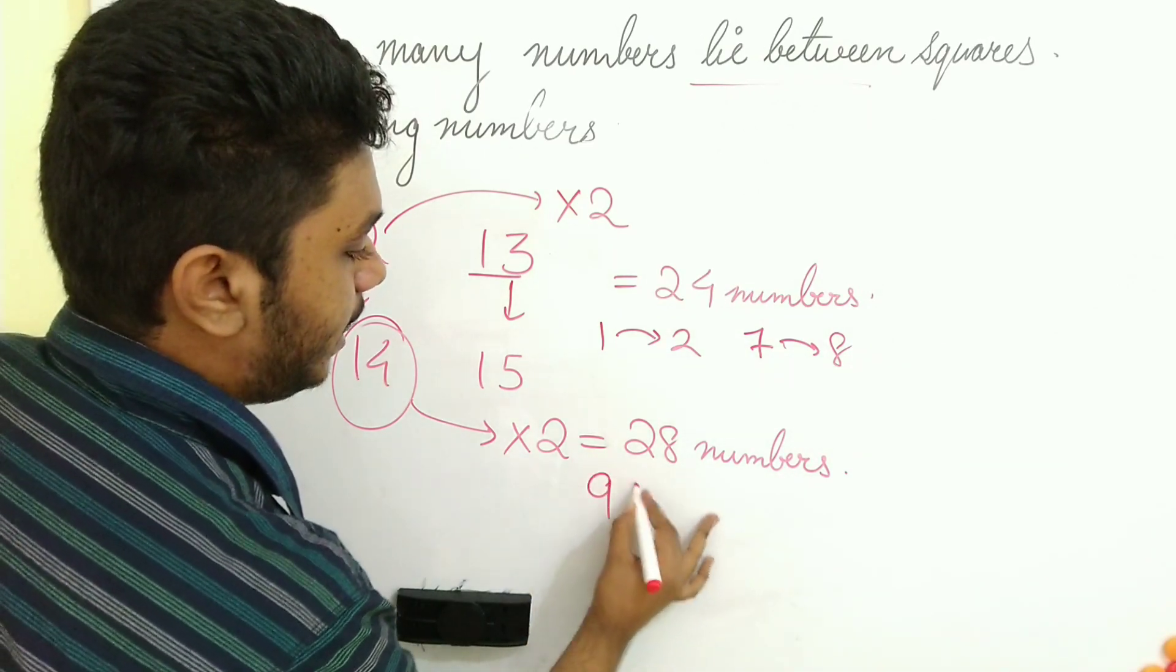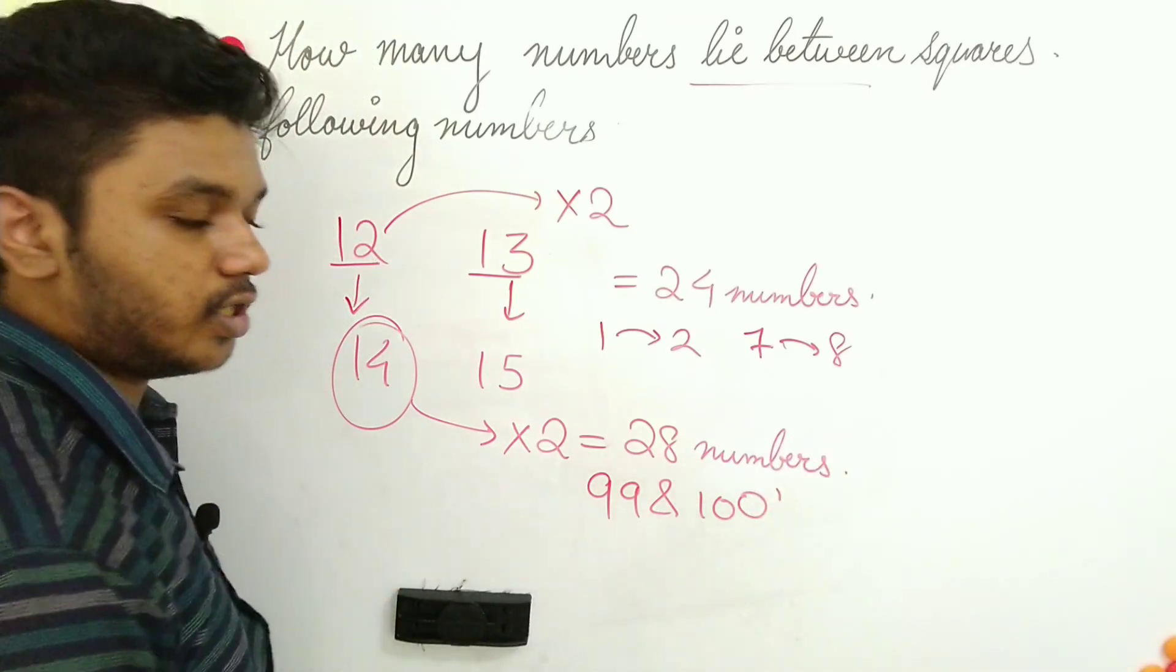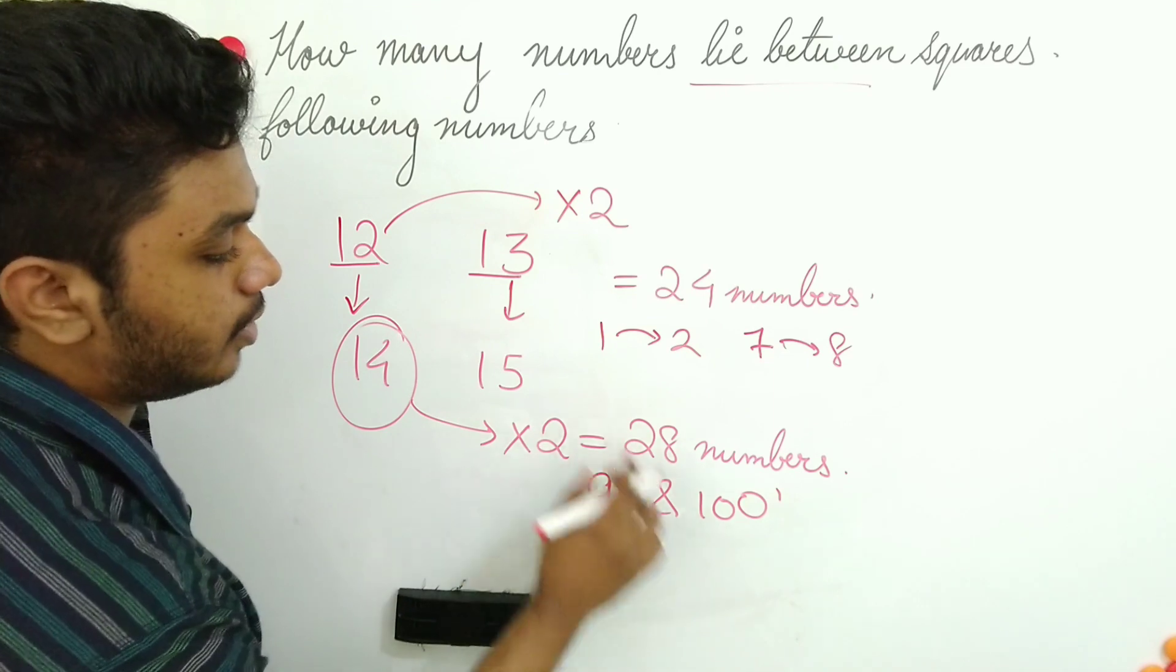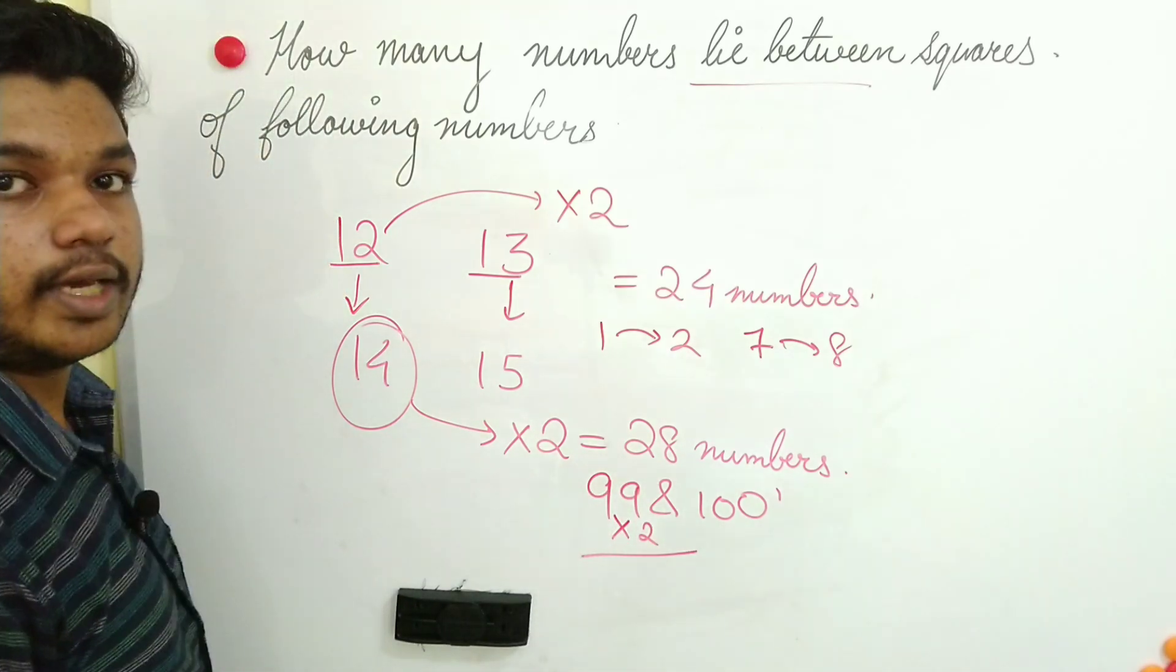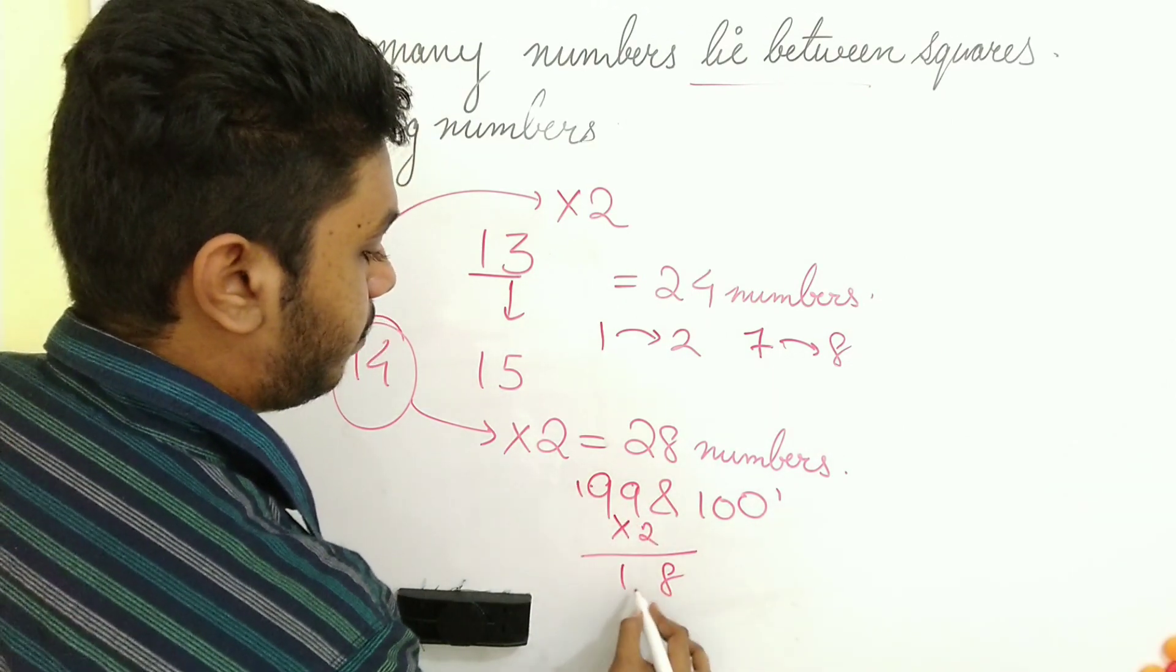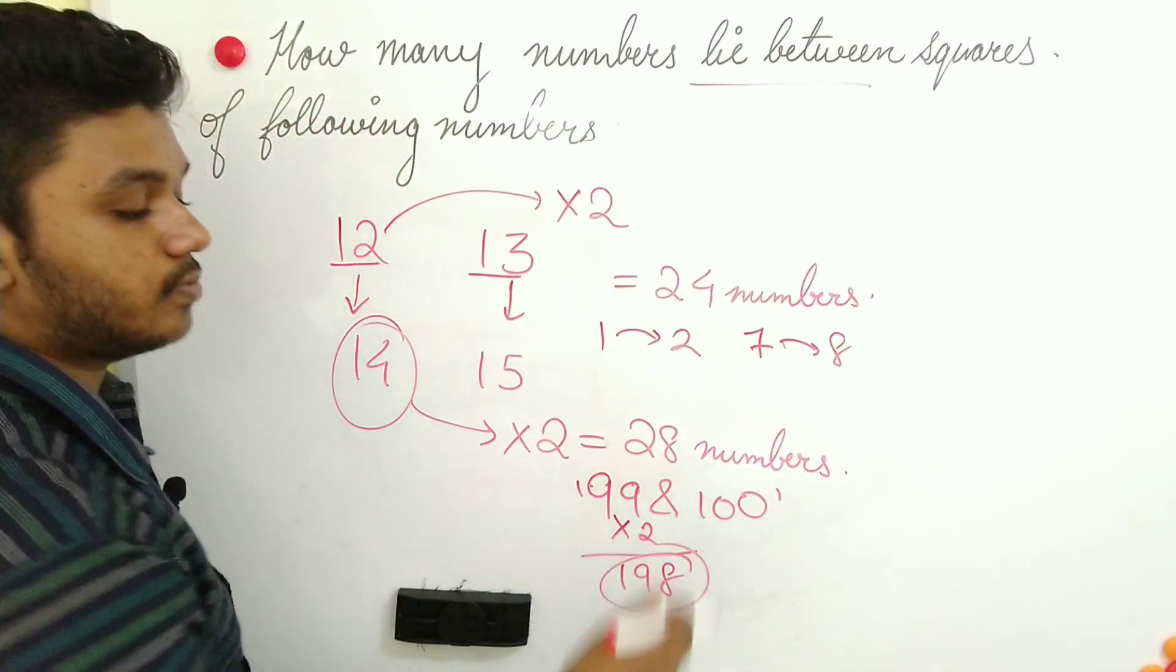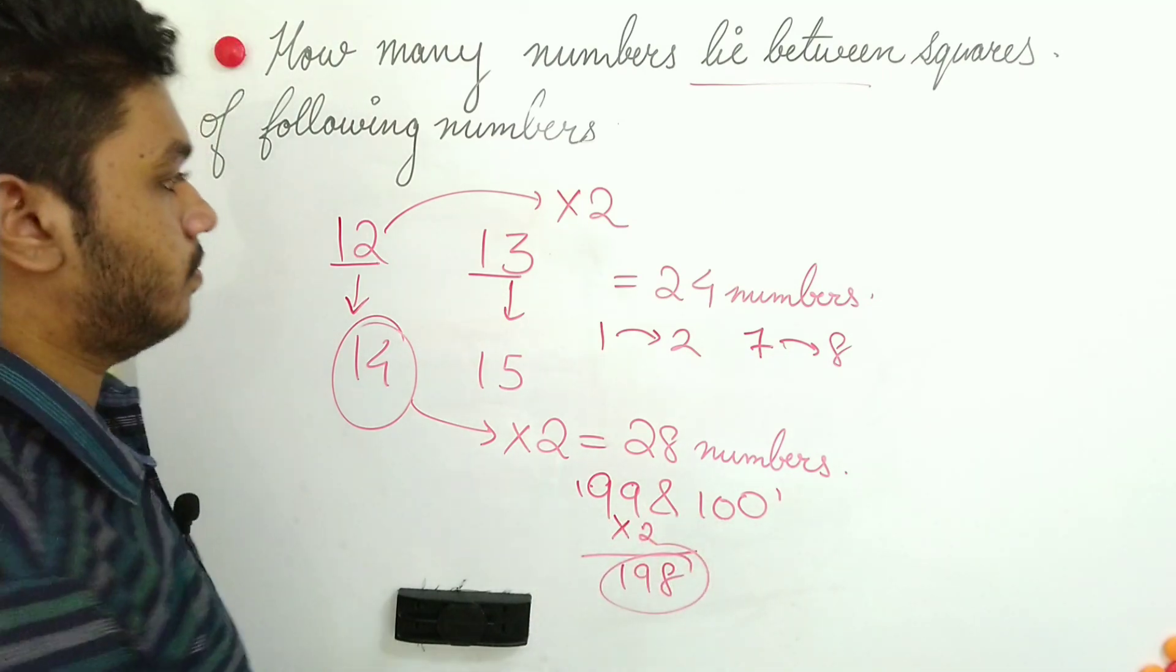Next: 99 and 100. These two are consecutive numbers. So I can directly multiply the smallest number by 2. 99 into 2 I need to do in order to get the answer. That is 2 times 9 is what? 18. 2 times 9 is 18 plus 1, 19. So 198 numbers will be there between these two squares of these two numbers.